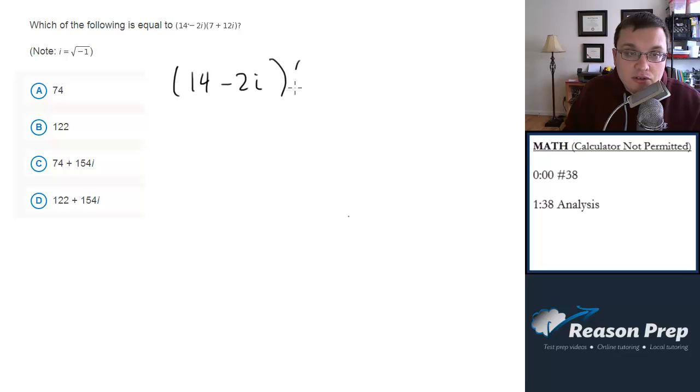So let's go ahead and write this out and then FOIL. So we're going to do the first times the first. So 14 times 7 is 98.